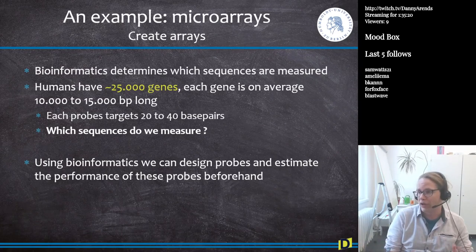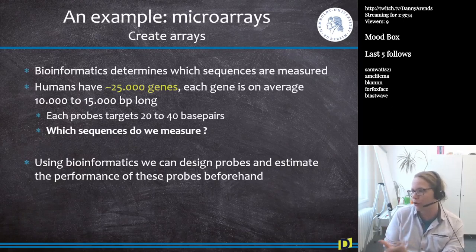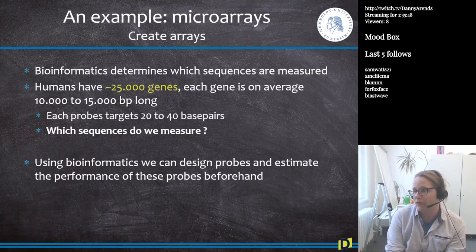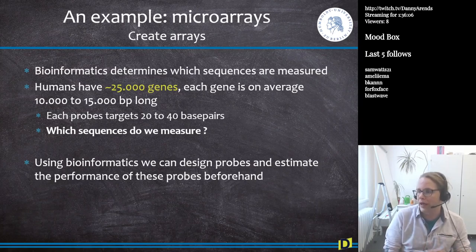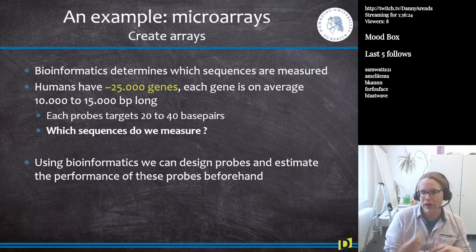Each gene in the human genome is around 10,000 to 15,000 base pairs long. If you multiply those numbers together, you get an idea of the base pairs we could measure. But we only have probes which are 20 to 40 base pairs long, so we definitely have to make a decision on what to measure. There are around 5 million probes you can put on a microarray, but 5 million times 40 is not the same as 25,000 times 15,000 — so we do have to make decisions. Using bioinformatics, we design these probes and estimate their performance beforehand, because not every probe works due to temperature sensitivity or poor binding from too many A's and too few C's.